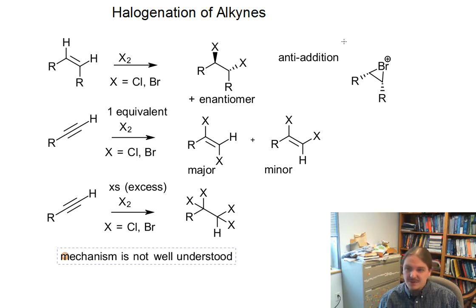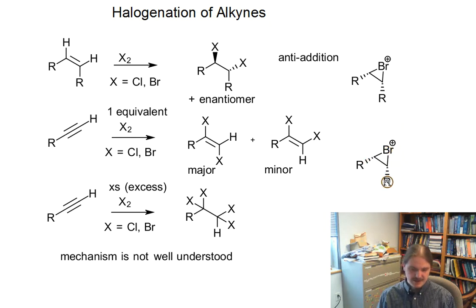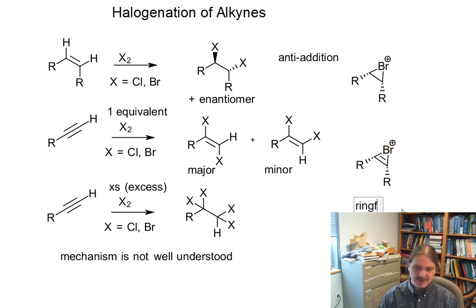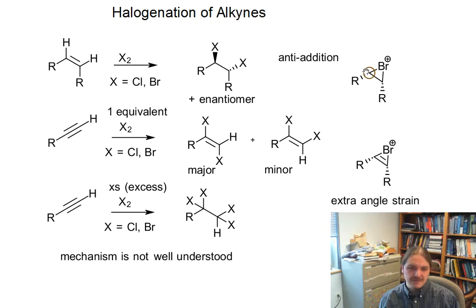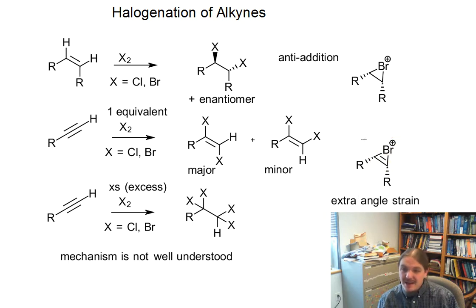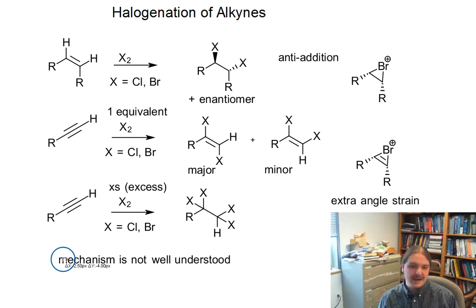For example, if we took the three-membered ring intermediate, and instead of it coming from an alkene it comes from an alkyne, we have that extra double bond in there and all this extra ring strain. The three-membered ring already has a lot of angle strain, but the double bond wants to have 120-degree bond angles instead of 60, and in the alkene case we have about 109 degrees — here we want 120 and we have 90. So there's more angle strain. Additionally, the existence of the syn-addition product suggests that the mechanism is different, but it's still not fully well understood.